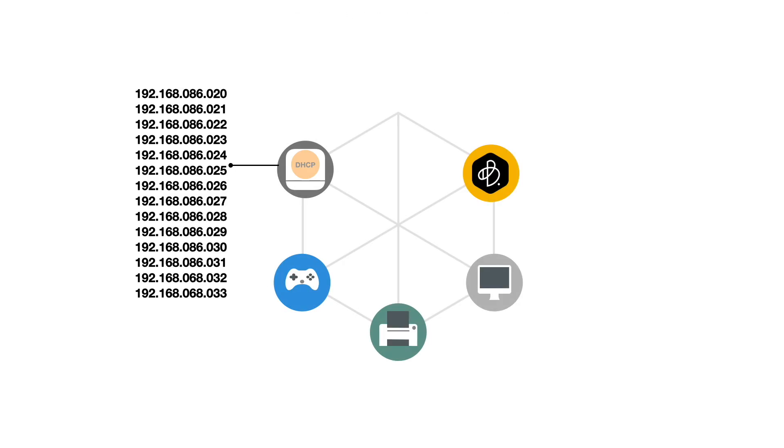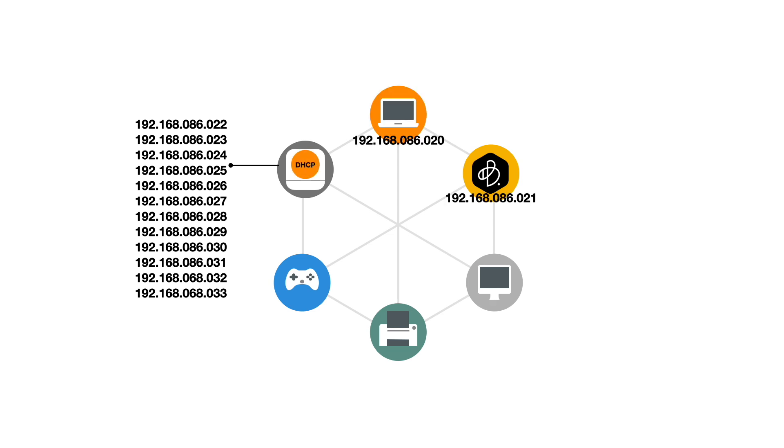This means that on a network, each IP address will need to be unique while also falling within a specific range of numbers. So in order to make managing IP addresses easier, we use something called a DHCP server to issue and manage the IP addresses being given to devices on our home network.